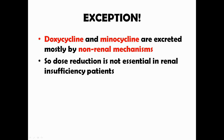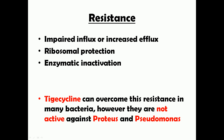Resistance to tetracyclines occurs by three main mechanisms: impaired influx or increased efflux via active transport, ribosomal protection — where bacteria secrete proteins that protect the 30S ribosomal binding site — and enzymatic inactivation. The most important mechanisms are the first two; enzymatic inactivation is not very significant.